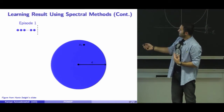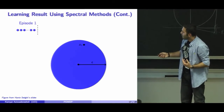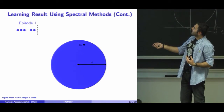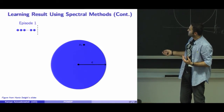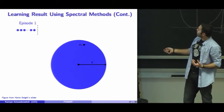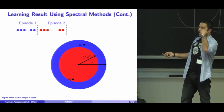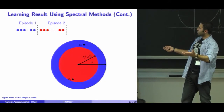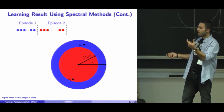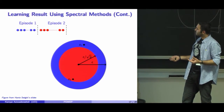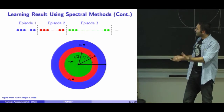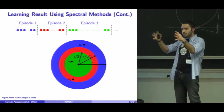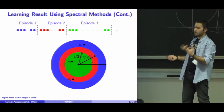This cartoon illustrates the process. At the beginning, we have some samples and come up with an initial estimation. At the next episode, we collect more samples and come up with a tighter bound. The actual value is here, and this is the error. The confidence band is this circle. At each next episode, we collect more samples and tighten the uncertainty and our confidence bound.